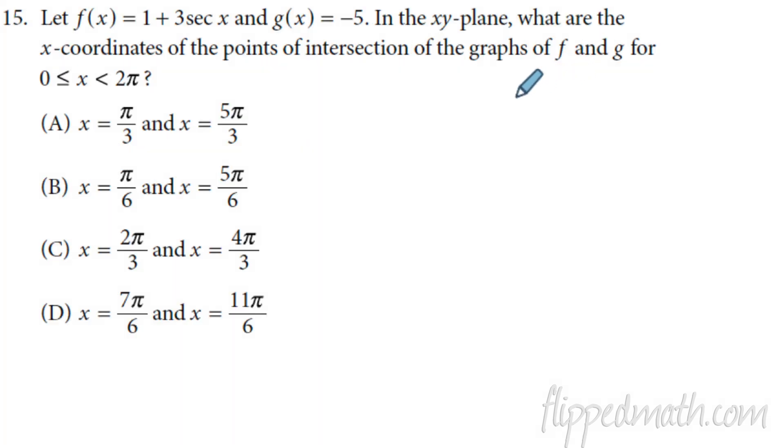And now we're on to number 15, which is our trig question here. They say F of X and G of X, and they want to know where they intersect. That means where they're equal to each other. So we're going to just set them equal. Negative five equals one plus three times the secant of X. Now I'm going to subtract one from each side, and then I can divide by three. When we get to that, and we are going to get the secant of X equals negative two. Hopefully you can see all that. But we remember the secant is the reciprocal of the cosine.